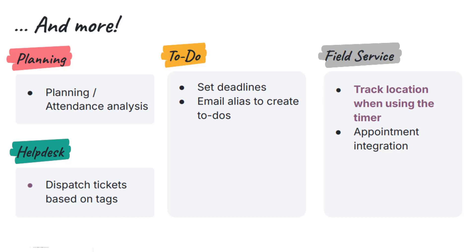Odoo's simple to-do app now allows creating tasks via email alias and supports setting deadlines on tasks. This makes it easier to capture work items — an email to todo@company.odoo.com can log a task. Tickets can be auto-assigned or routed based on tags or keywords. For example, a ticket tagged 'network' could automatically go to the IT support team, helping large support teams triage issues faster.